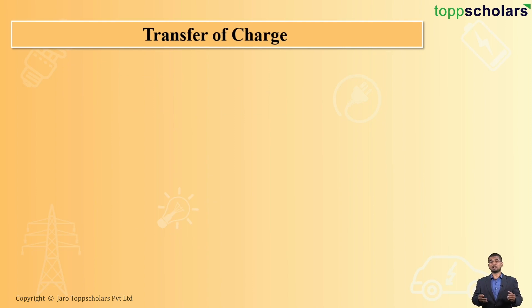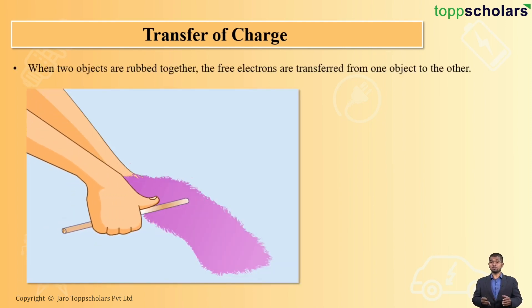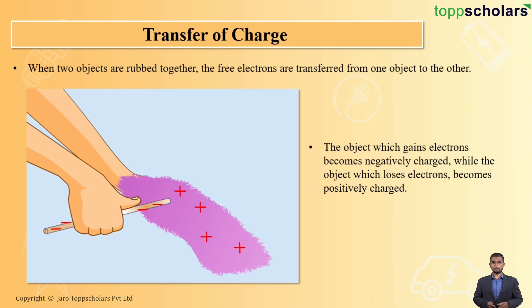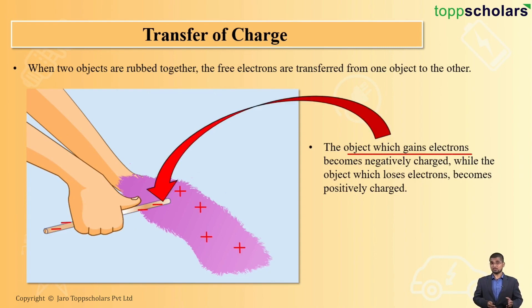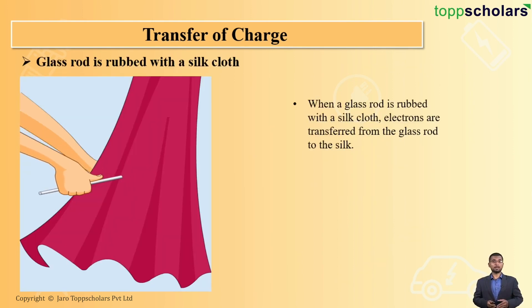Now let us understand about the transfer of charge. When two objects are rubbed together, the free electrons are transferred from one object to the other. The object which gains electrons becomes negatively charged, since the number of electrons increases and electrons are themselves negatively charged, while the object which loses electrons becomes positively charged. This can be understood with the help of the following examples.